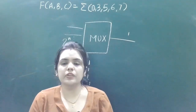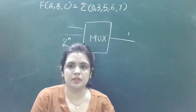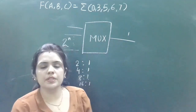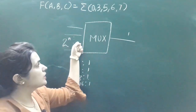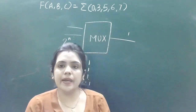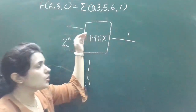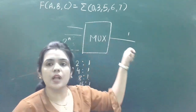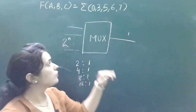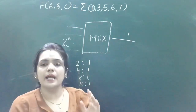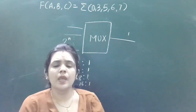In today's video, we will see how we can implement a given Boolean function using a multiplexer. A multiplexer is a combinational circuit which has 2 to the power n input lines and one output line. At a time, the multiplexer selects data from one of these input lines and directs it toward the output line. That's why it is also called a data selector device.